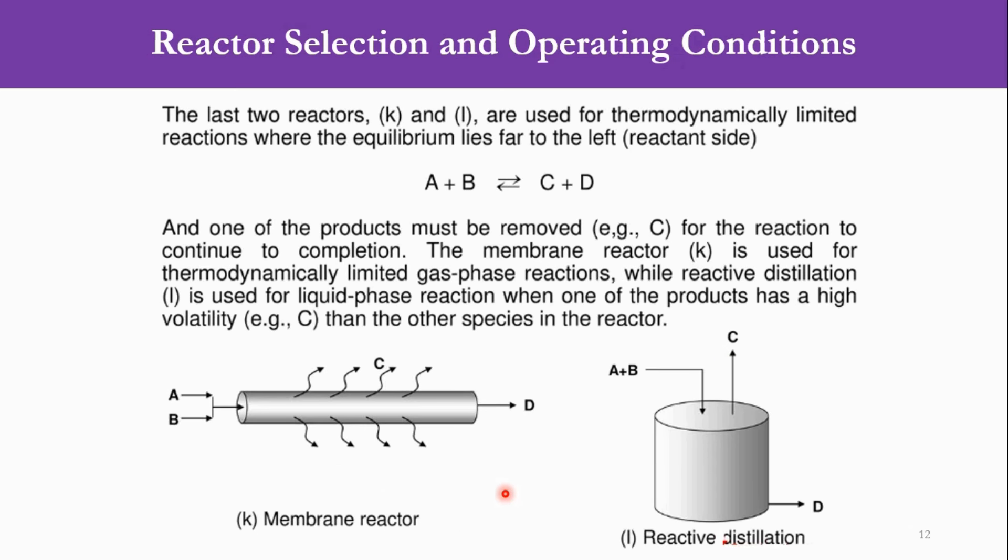Then we have some advanced reactors which are membrane and reactive distillation. These are used for those type of reactions where the equilibrium lies far to the left, meaning to the reactant side. So obviously we have to remove one product from the system to continue the completion. Like you can see that A and B are fed to the system. C and D are produced. But we have removed C so that the reaction can be proceeded to the right side. Accordingly, the membrane reactor is used for thermodynamically limited gas phase reactions, while reactive distillation is used for the liquid phase reactions when one of the products has a high volatility than the species in the reactor.